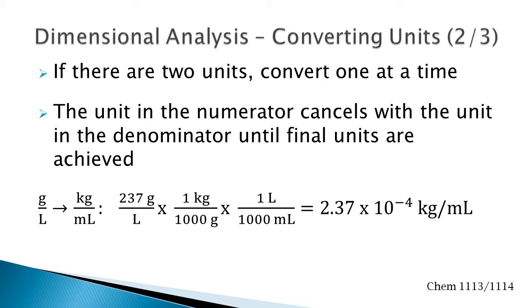In this example, 237 grams per liter. First, convert from grams to kilograms. Put the gram unit in the denominator and kilogram in the numerator so that grams cancel out.